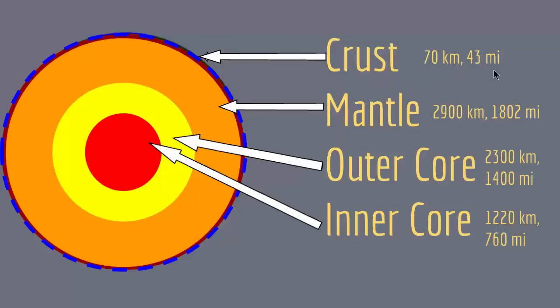These layers are defined by either their chemical or their rheological properties. Rheology means the study of flowing. These layers are composed of different materials that flow differently, so based on rheology — the way these materials flow — the Earth is divided into these layers.